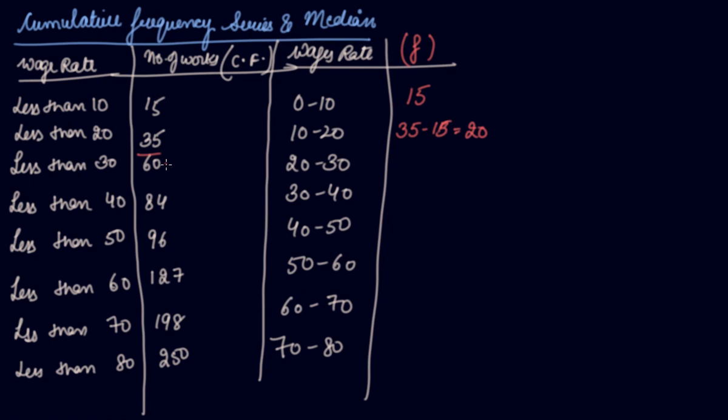After that, less than 30, 60 minus 35, 25. 30 to 40 is 84 minus 60, 24. 40 to 50 is 96 minus 84, that is 12.